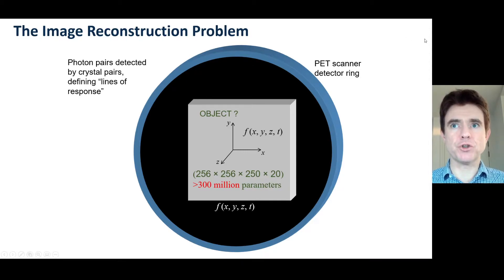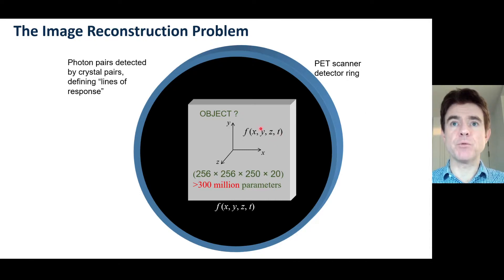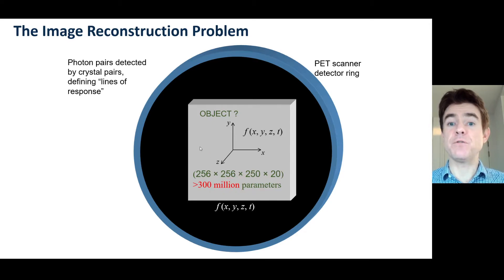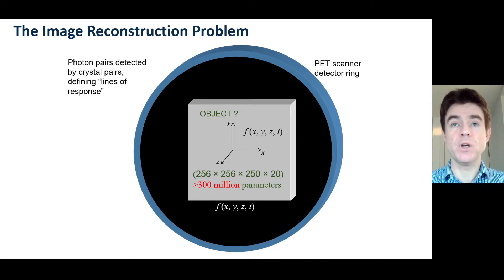In this video I'll look at how we can do a simple back-projection of the data, and in so doing we end up with a really good example of convolution in 2D. The general case is a radiotracer distribution f as a function of x, y, z, and time, which is nearly always discretized in practice. So often what we're trying to do is find hundreds of millions of parameters from hundreds of millions of those back-to-back photon pairs.